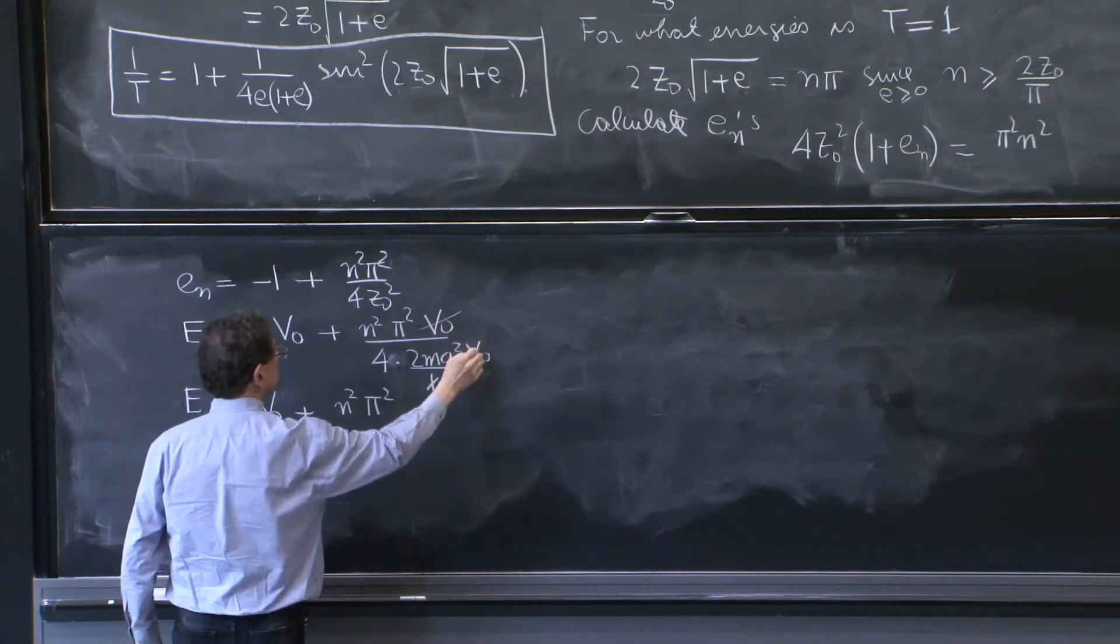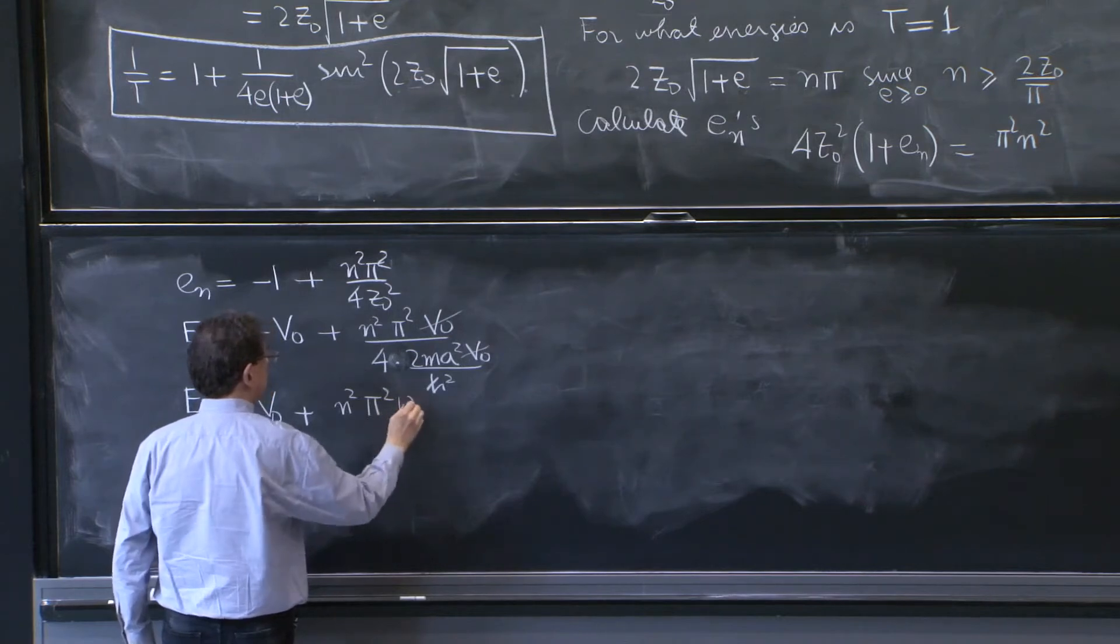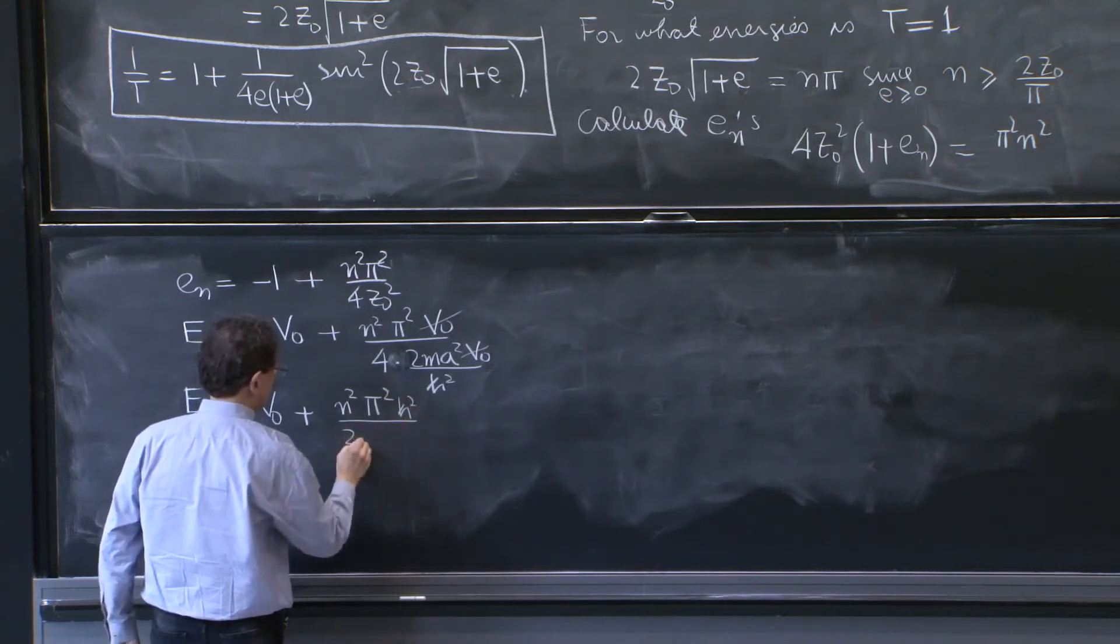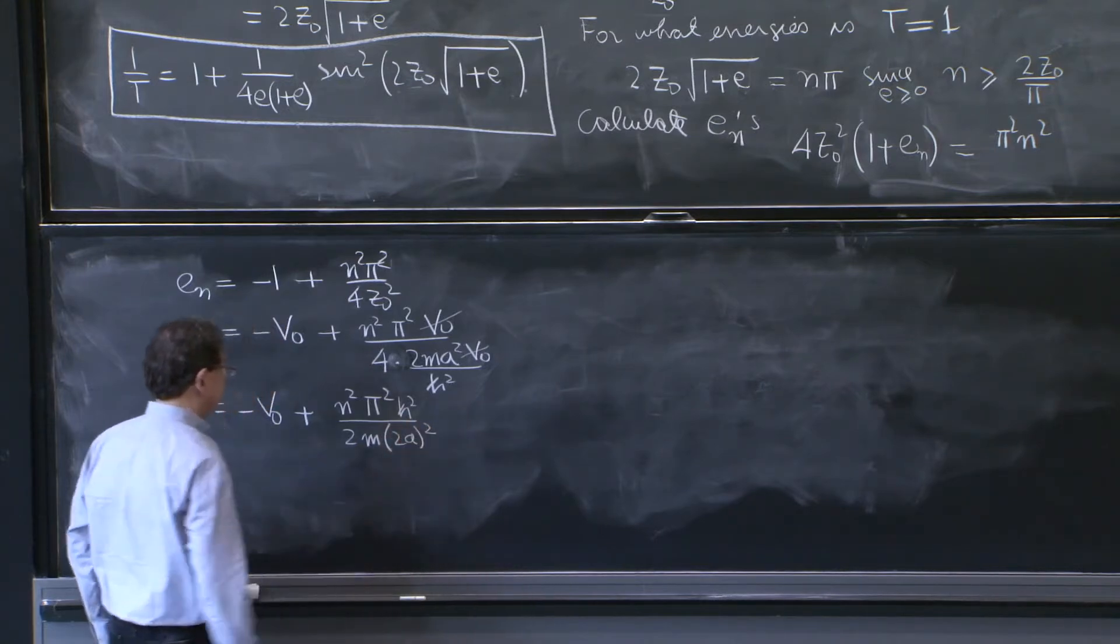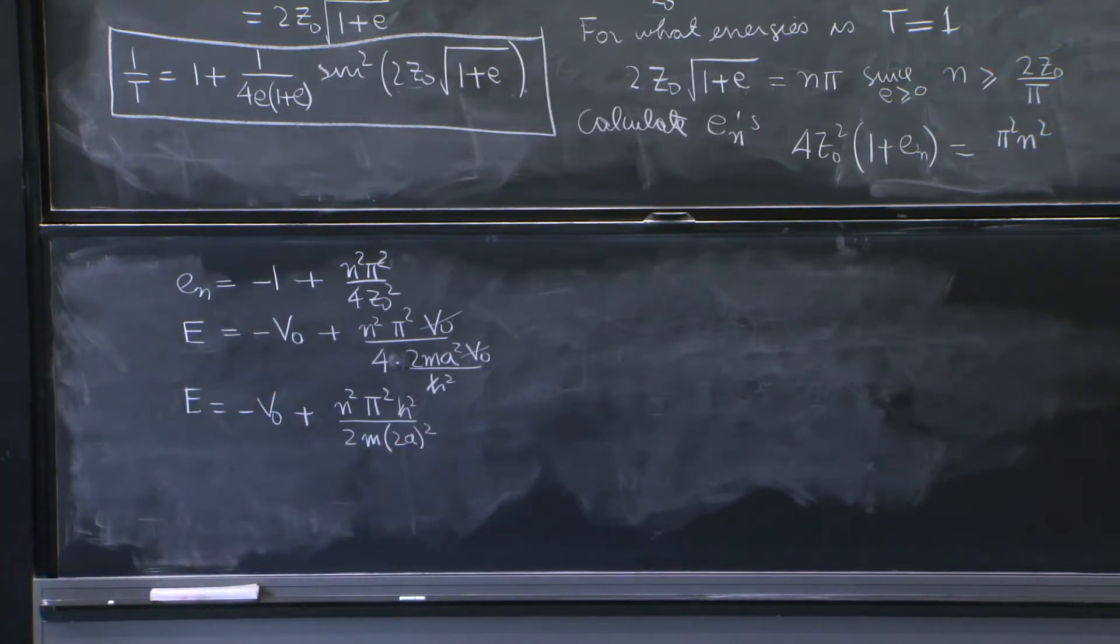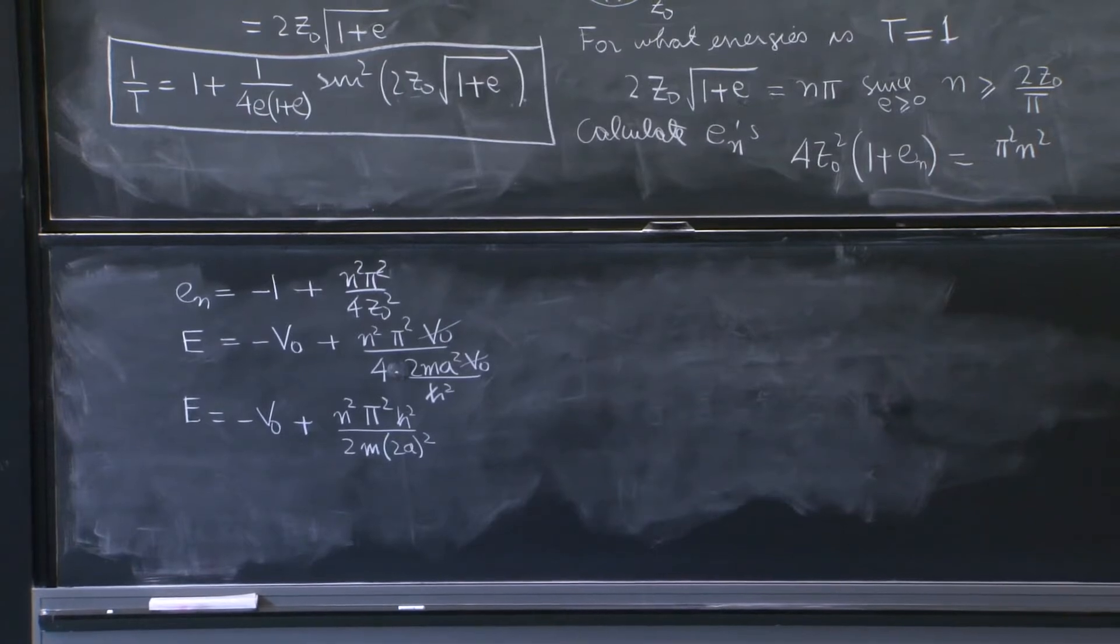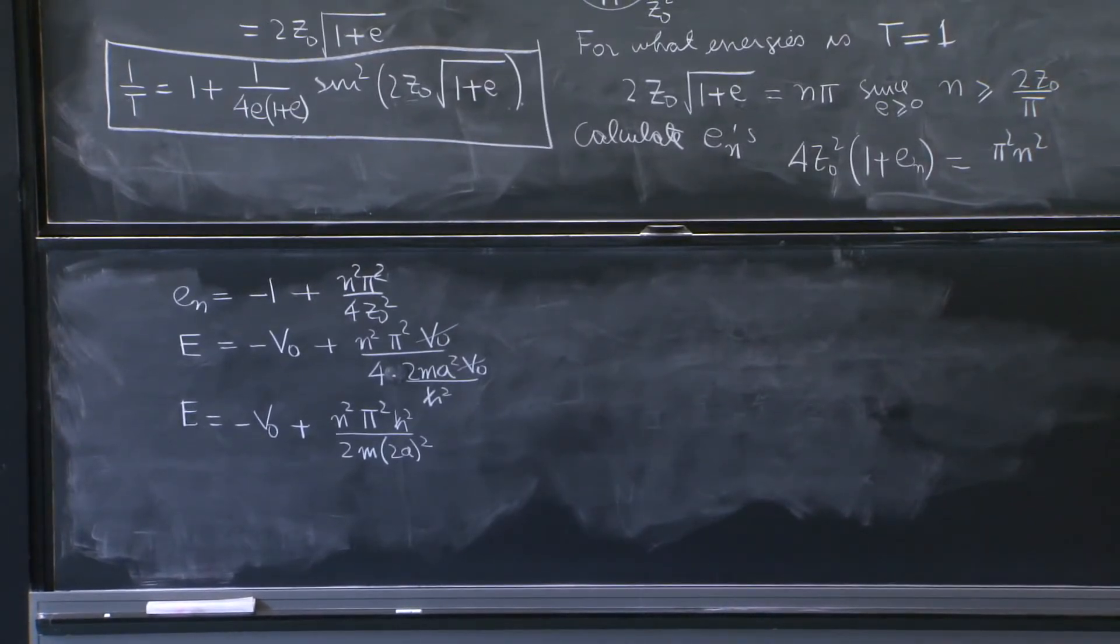The v0's cancel. h squared over 2m times 2a squared. I think I got every term right.